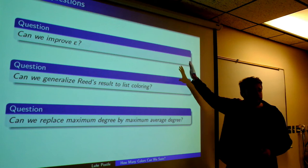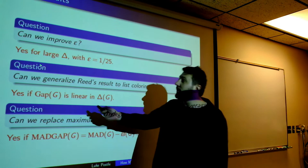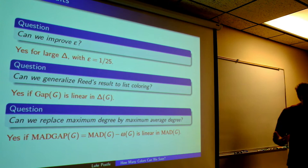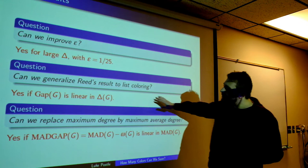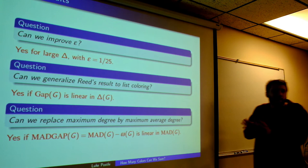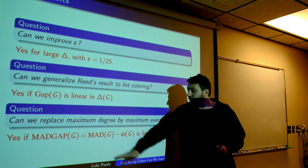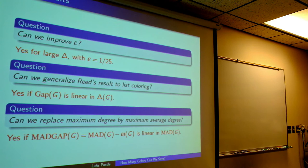Yes, we can improve epsilon. For large delta, we prove that epsilon equals 1/25 suffices — a much more reasonable bound — and with a little more work, perhaps 1/20. We can generalize Reed's result to list coloring as long as the gap is linear in delta, meaning the clique number is not very close to the maximum degree. And we can also replace max degree by max average degree, looking at what I call the MAD gap — the difference between MAD and omega — provided that gap is linear in MAD.